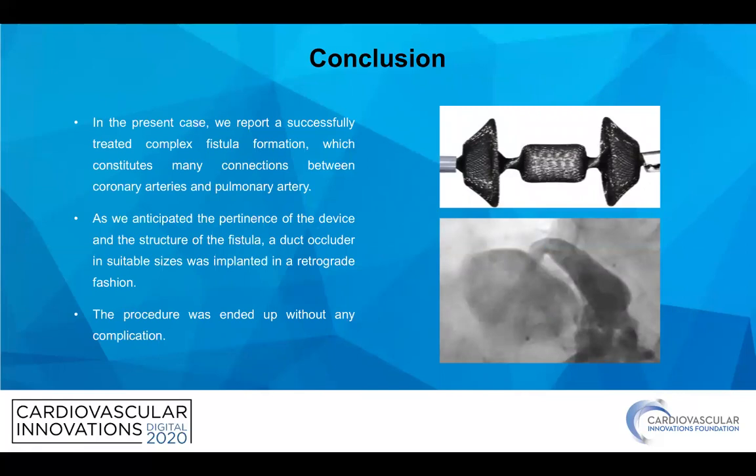To conclude, in the present case we reported a successfully treated complex fistula formation constituting many connections between all coronary arteries and the pulmonary artery. Anticipating the pertinence of the device and the structure of the fistula, a duct occluder in suitable size was implanted in a retrograde fashion. The procedure ended without any complication and the patient is doing very well on her follow-up.